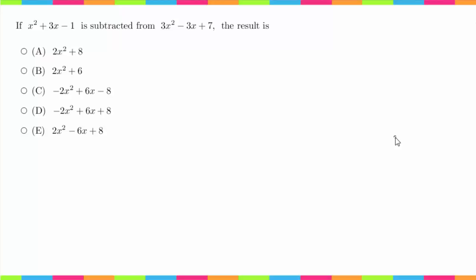Hey guys, welcome back. Today we are working on number 23 of the mathematical analysis readiness test. This question says if x squared plus 3x minus 1 is subtracted from 3x squared minus 3x plus 7, the result is what.